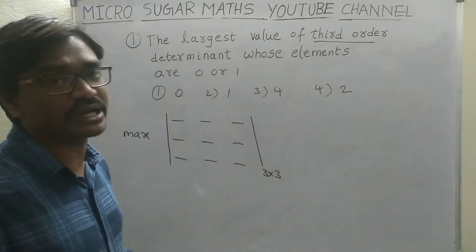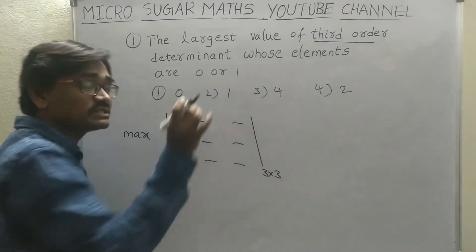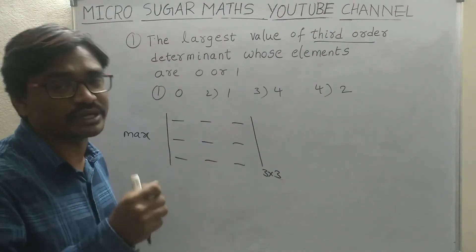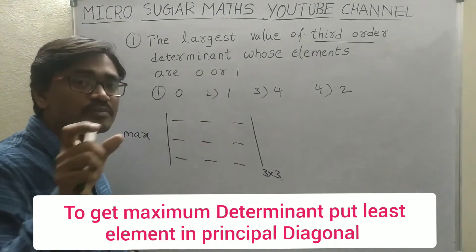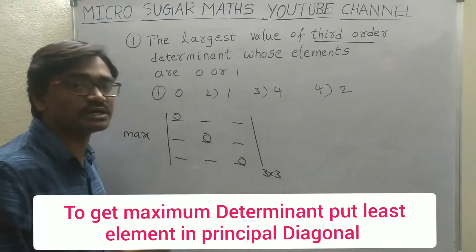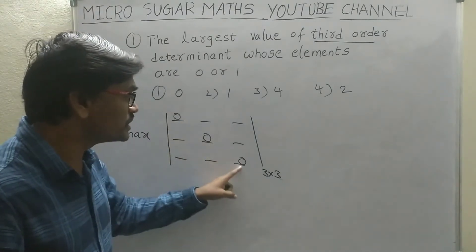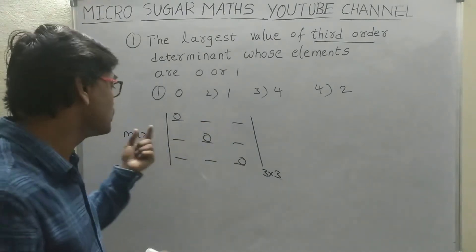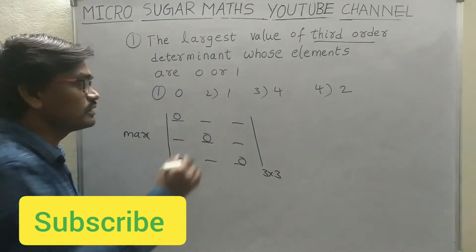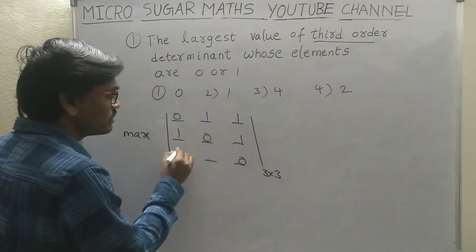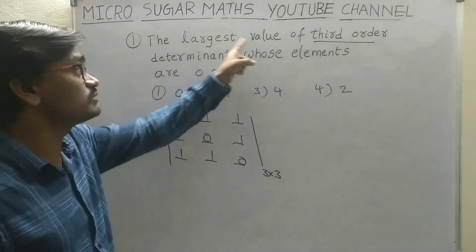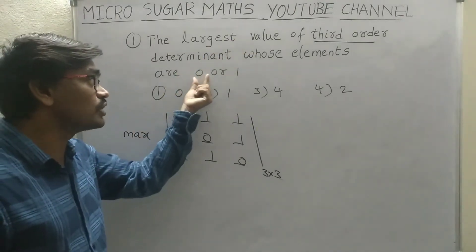To get the largest determinant, fill up the least value. What is the least element? 0 is the least element. Take the 0 element and put it in the principal diagonal — 0, 0, 0. Fill up 0 in the principal diagonal to get your maximum determinant. Next, what is the highest number? 1. Put the next number, 1, at the remaining places. Now find out the determinant — you will get your largest value using 0 or 1.